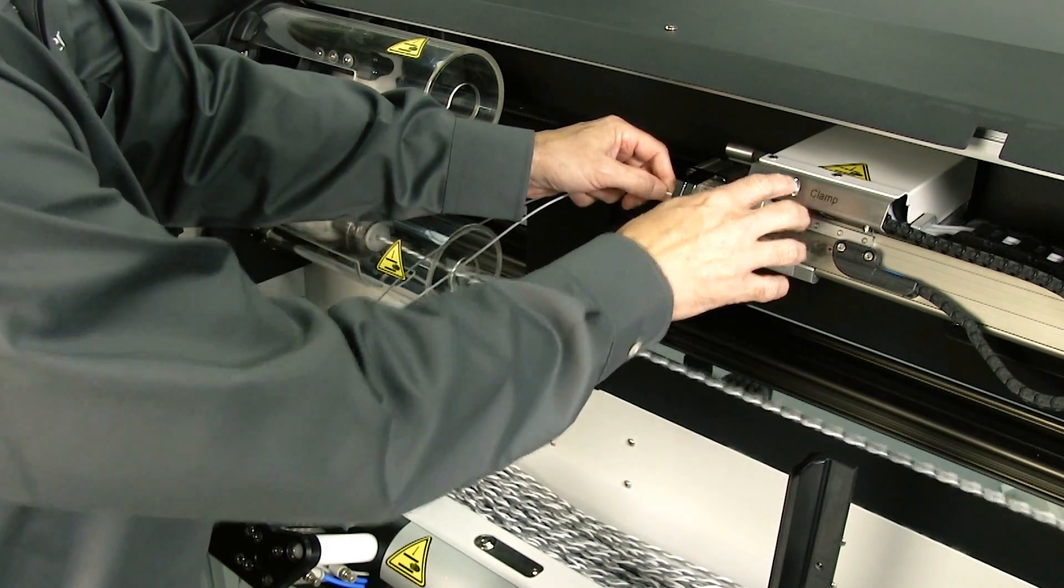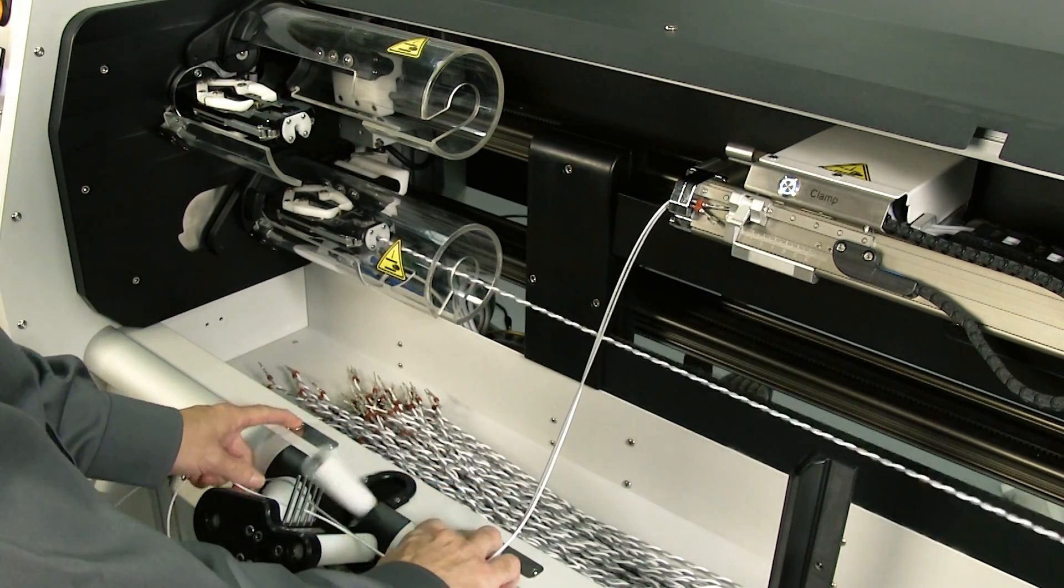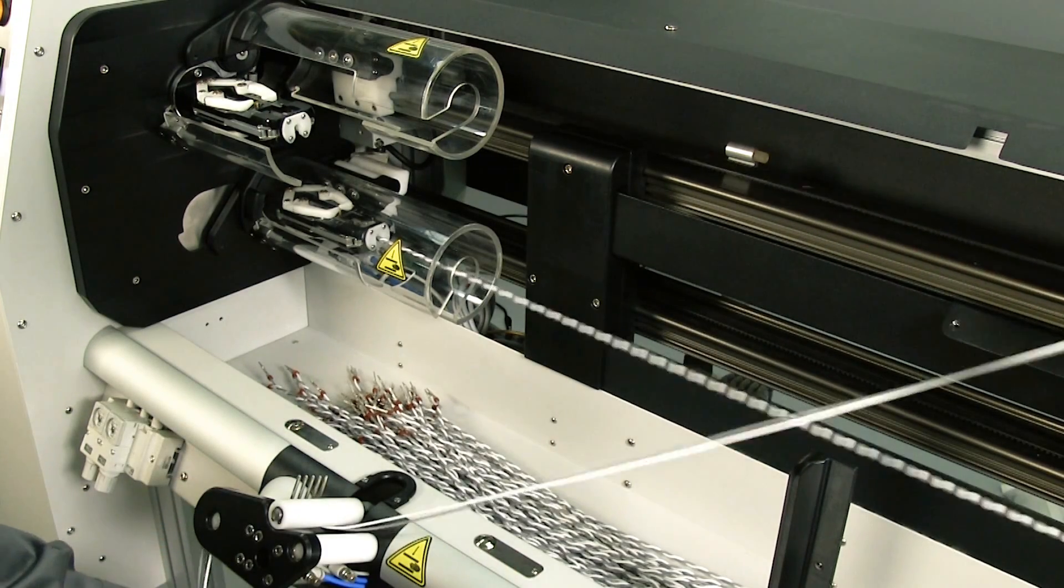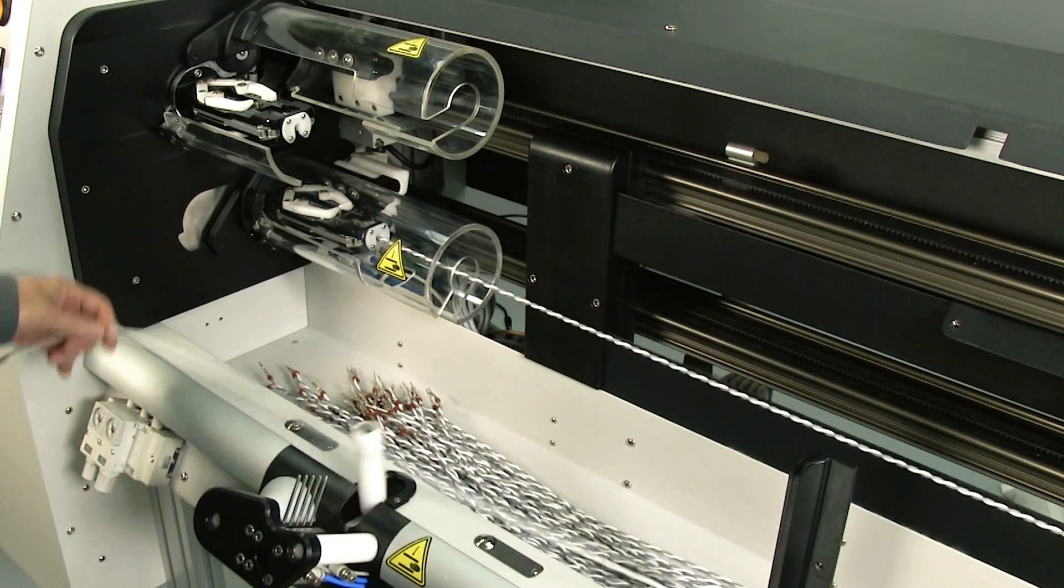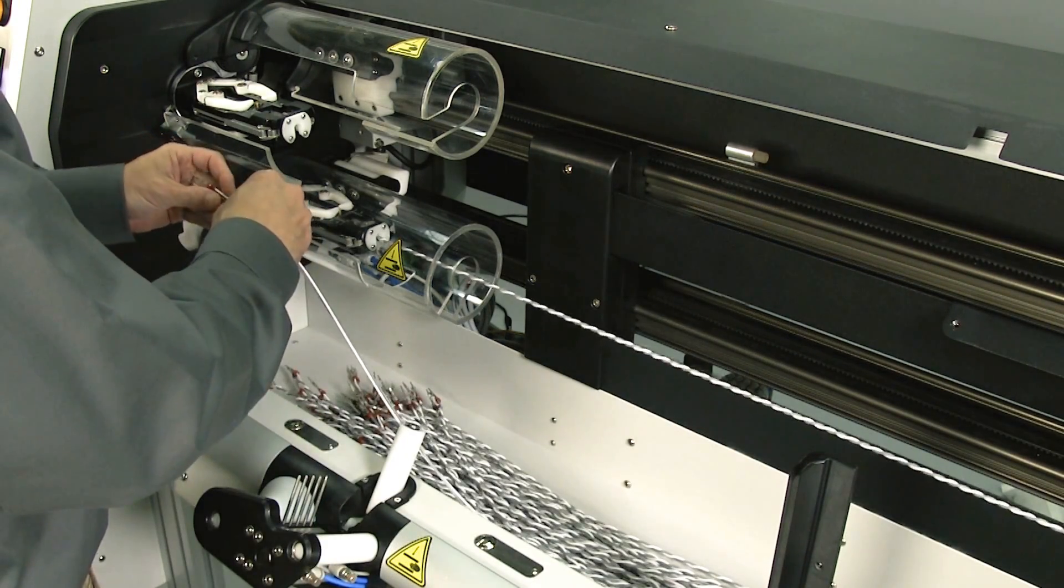Both models operate using two alternating twisting lines. While the first line is twisting a wire set, another set of untwisted wires can be loaded onto the second twisting line.